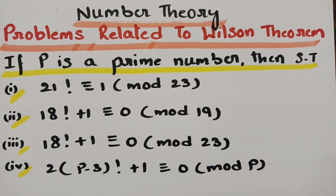In my previous video I posted a few problems related to Wilson's theorem where we had to find the remainder when a certain problem is given — those are all of one kind. Here the first problem is: if P is a prime number, show that 21! + 1 ≡ (mod 23).